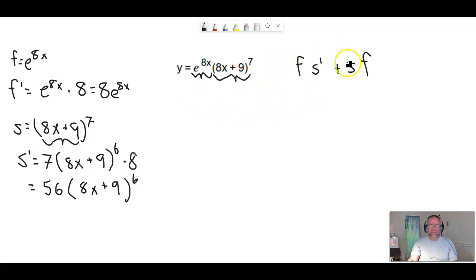All right, let's go ahead and put all this stuff together. So we're going to use this formula with all this good stuff we found. So this is going to be the first, which is just e to the 8x, times the derivative of the second, which is times 56, 8x plus 9 raised to the 6th power, plus the second, which is just this 8x plus 9 to the 7th power, times the derivative of the first, which is this 8, so times 8e to the 8x.